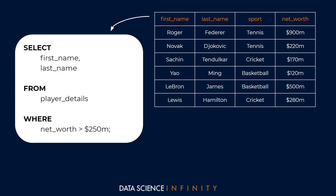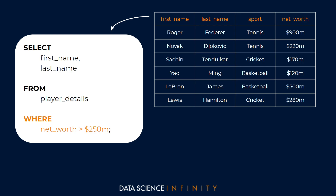From our dataset we want to create a shortlist — we only want sports people worth over $250 million. At the top of the query we have the SELECT statement, where we specify which columns we want returned. Since we only want names, we've specified the two name columns: first name and last name, separated by a comma. We can list as many columns as we want, or use an asterisk to return all columns. The FROM statement specifies the name of the table — here we're saying search for those columns in the 'player details' table.